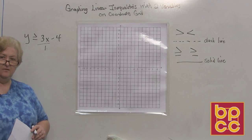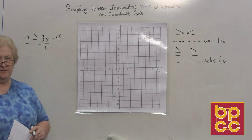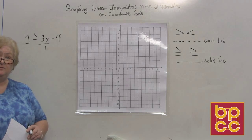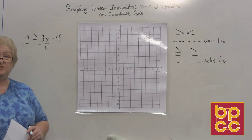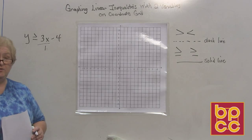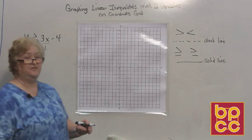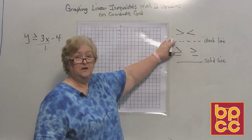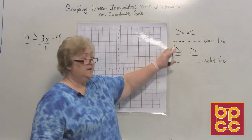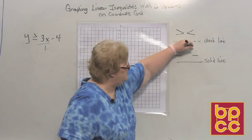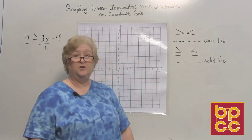Today we're going to be graphing again on the coordinate grid, very similar to what we've done in the past. Remember when we set up linear equations in slope-intercept? We're going to set up linear inequalities in slope-intercept and graph them. If the inequality sign is less than or greater than, we use a dashed line. If it's less than or equal to or greater than or equal to, we use a solid line.